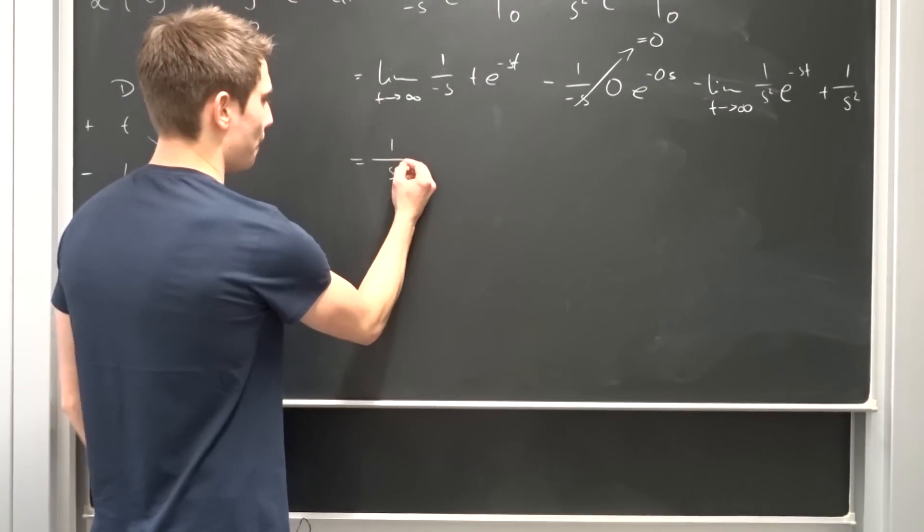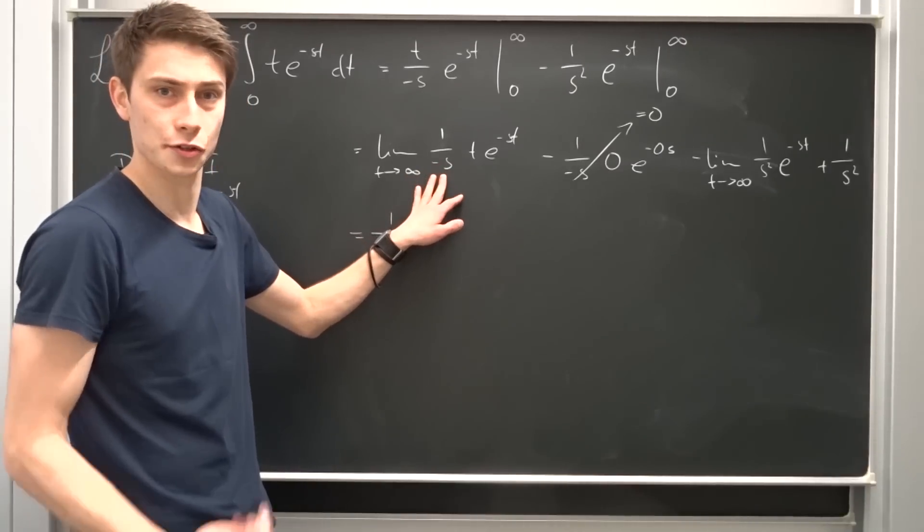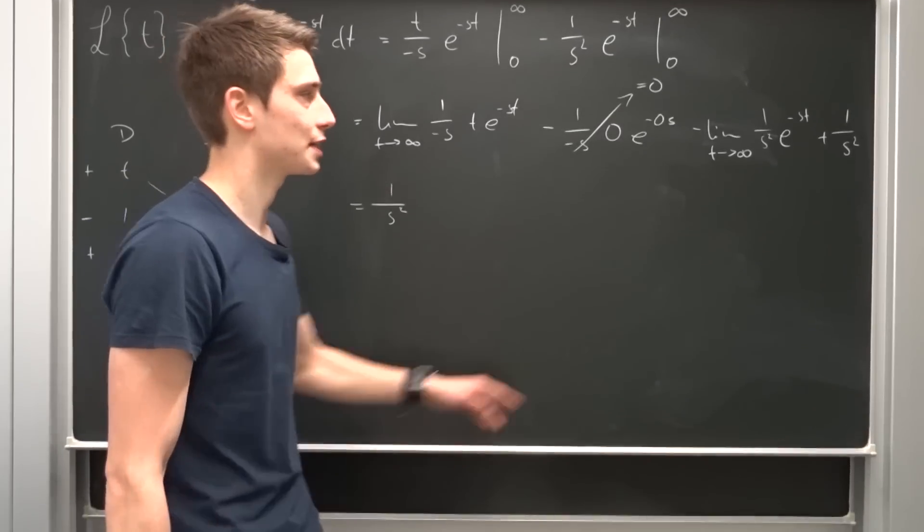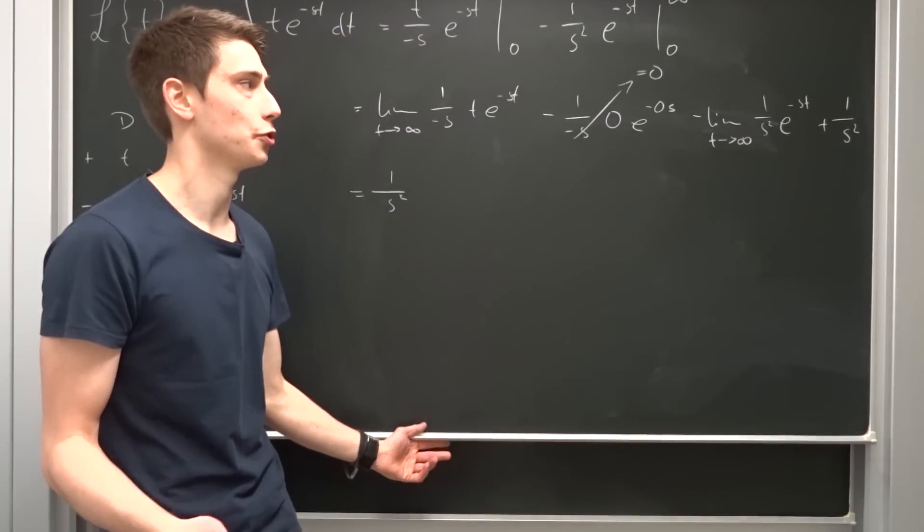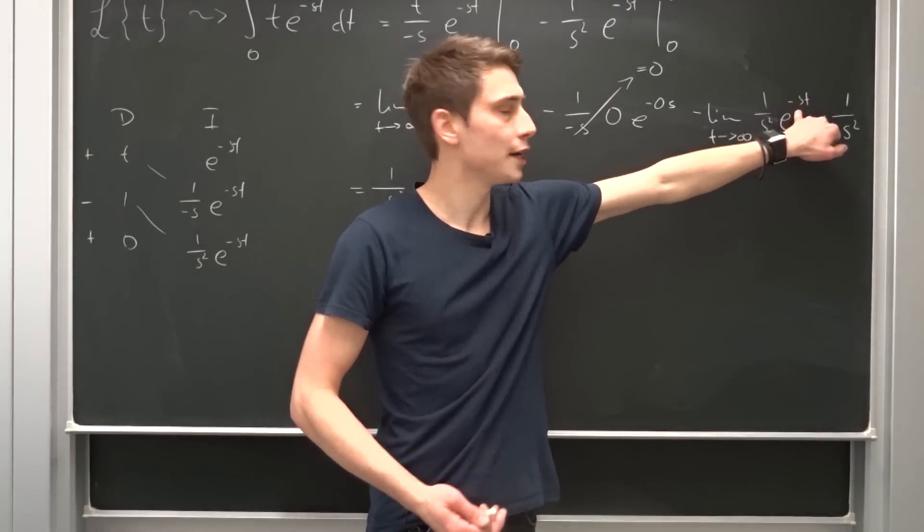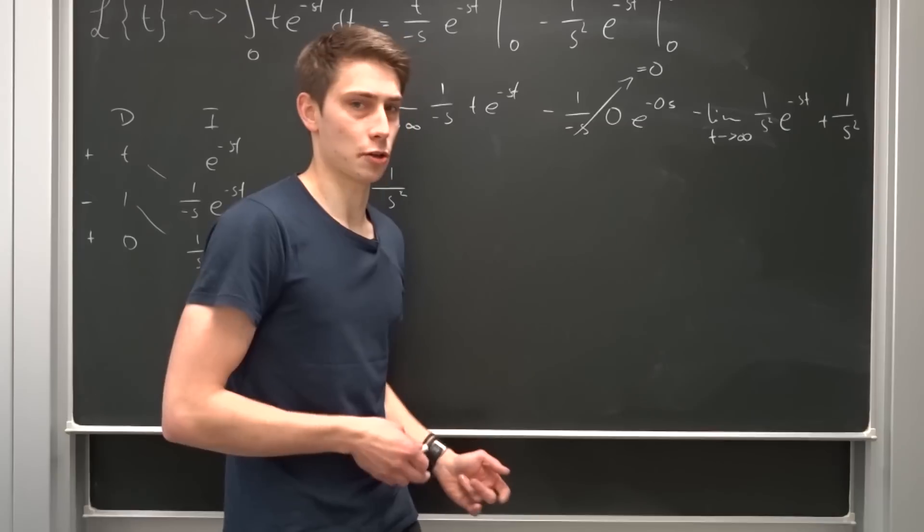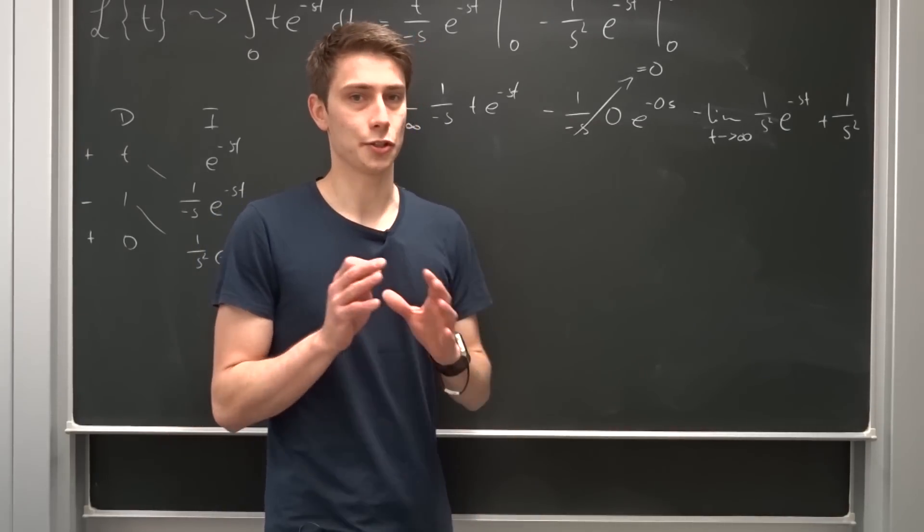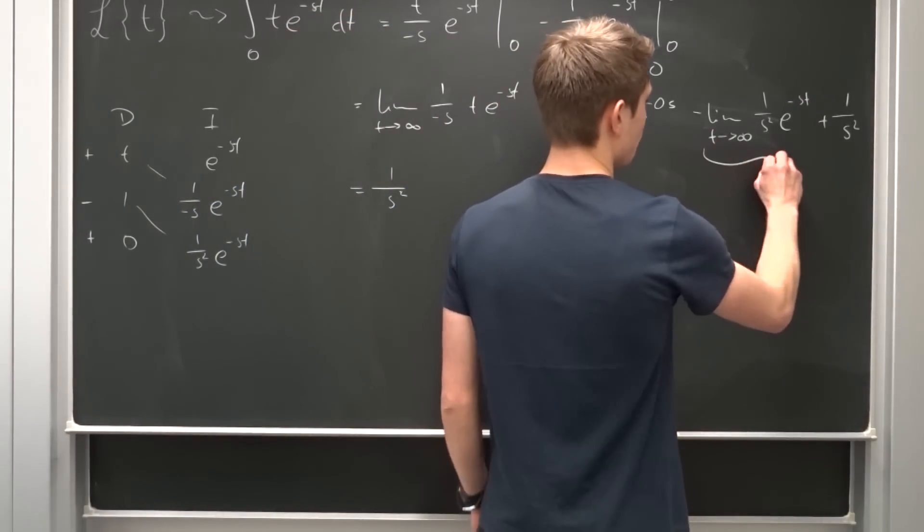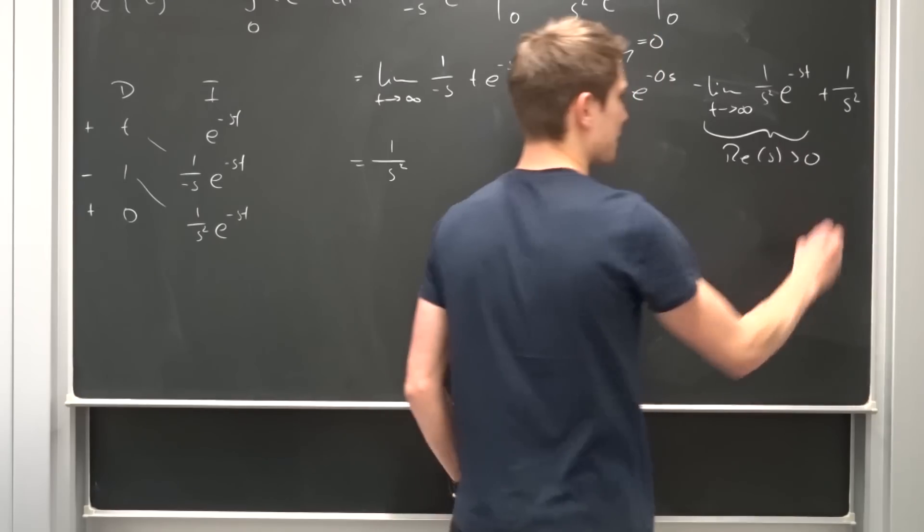And now we have to make things converge as always. So we need to get this to 0 somehow and we need to get this to 0 somehow. So let's start off with this term at first because it's the easier choice. So in order to make this thing 0 when t approaches infinity we need a negative exponent. So that would mean that s would be greater than 0. But s is a complex number so we are just going to take a look at the real part of s. Why this is the case, take a look in the description. I will be linked to the corresponding video. So our first condition for convergence is that the real part of s has to be greater than 0.